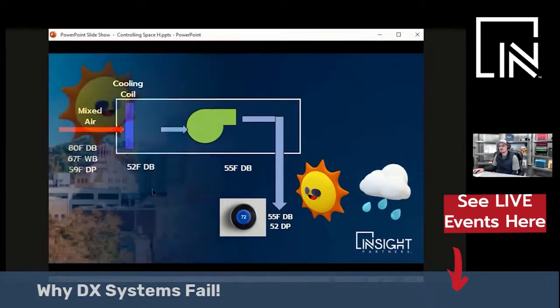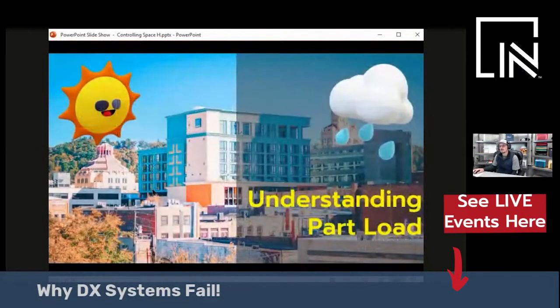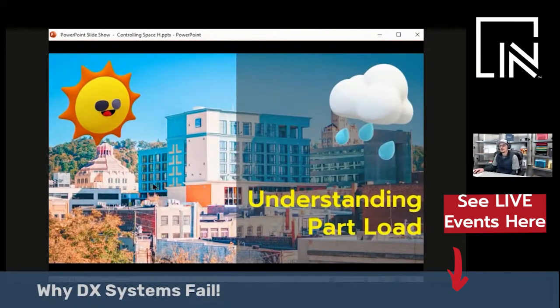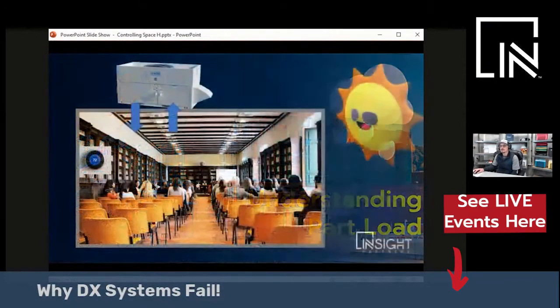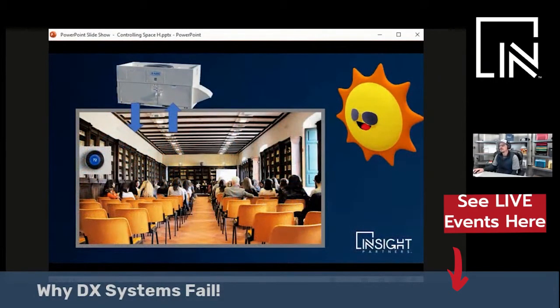And therein lies the problem with controlling humidity at all load conditions. To understand this scenario, you just have to understand part-load. So very briefly, systems are typically designed for full-load days. It's the middle of the summer. It's hot out. The sun's shining in all the windows. You have a bunch of people in the space. You want very cold air in that space.